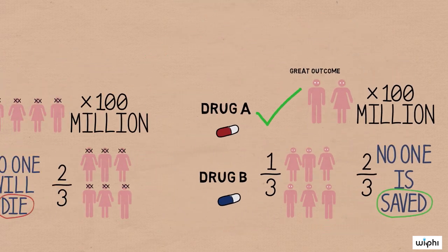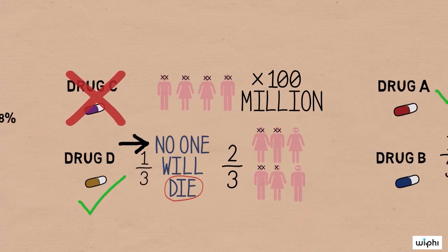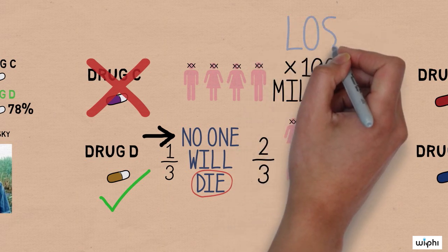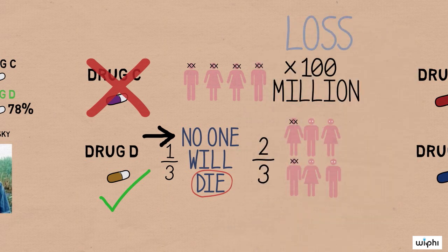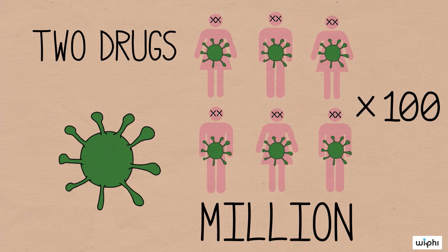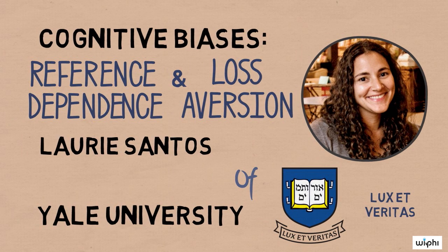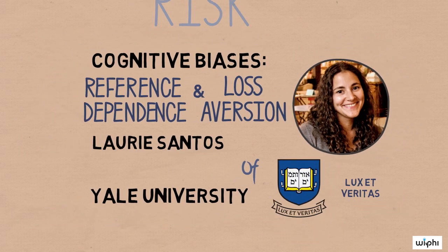Merely describing the outcomes differently changes which scenarios we find more aversive. If losses are mentioned, we want to reduce them as much as possible, so much so that we take on a bit more risk than we'd usually like. So describing a decision one way as opposed to another can cause us to make a completely different choice. Even in a life or death decision like this, we're at the mercy of how our minds interpret information. And how our minds interpret information is at the mercy of our cognitive biases.